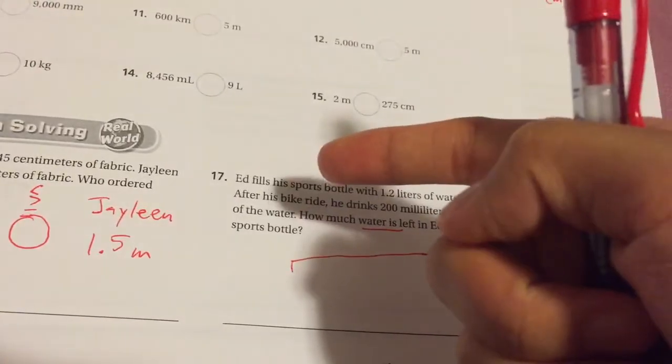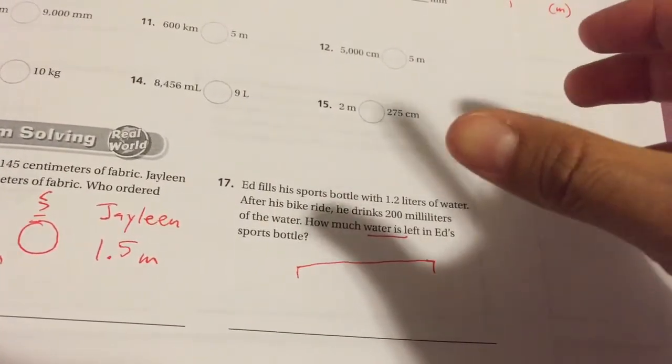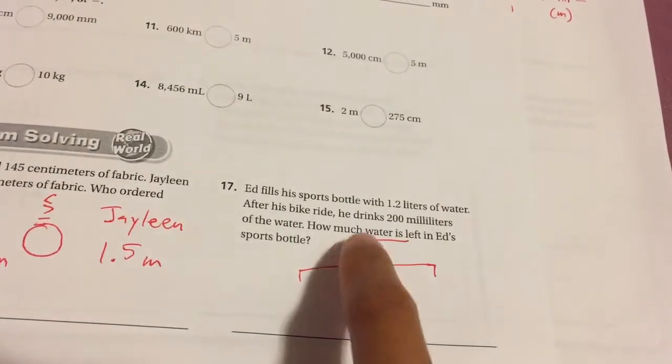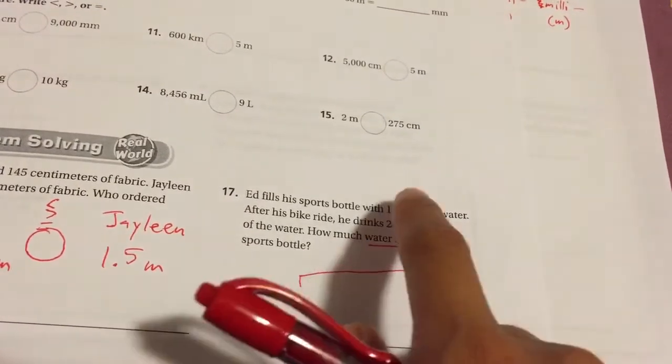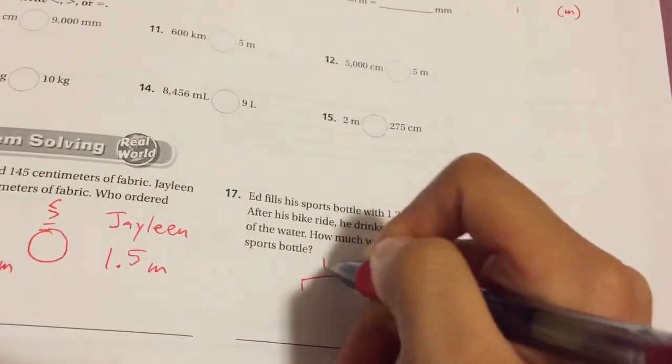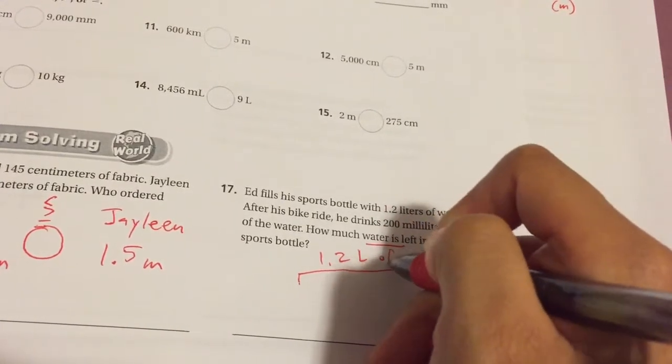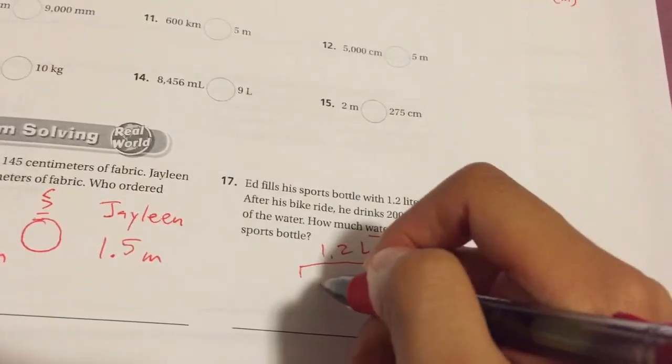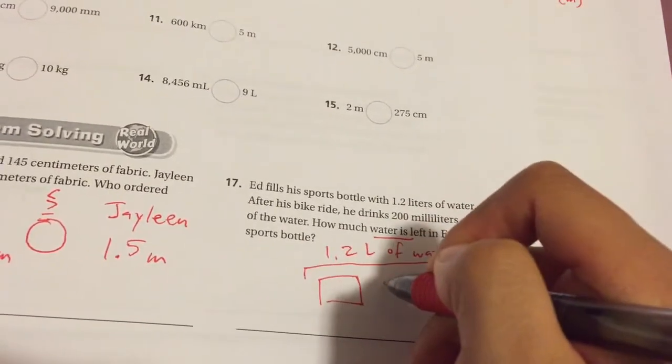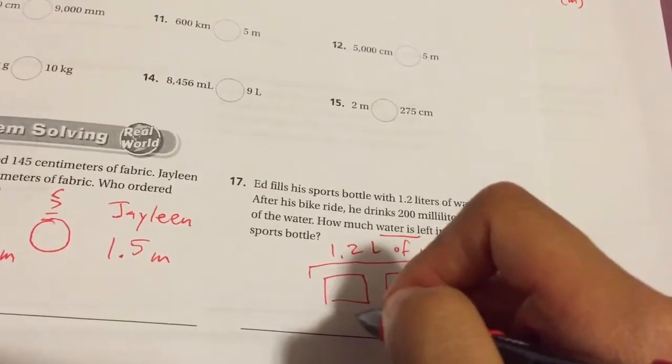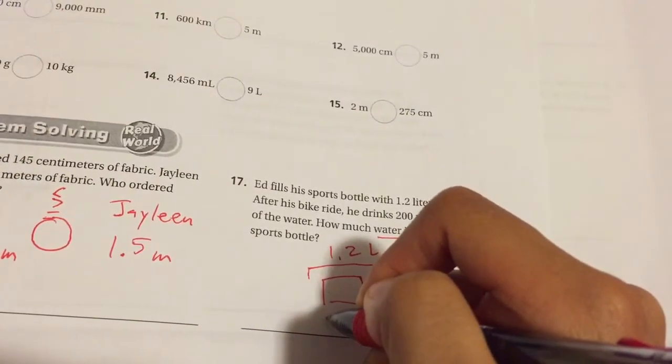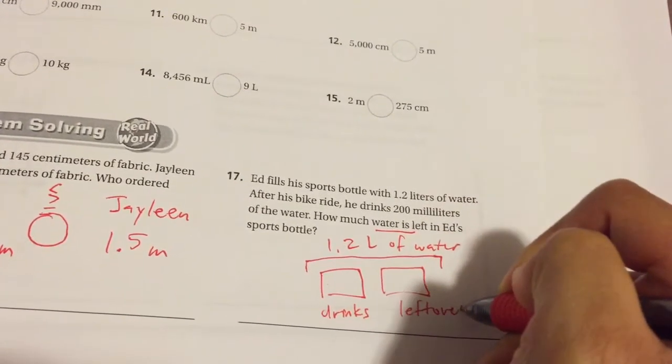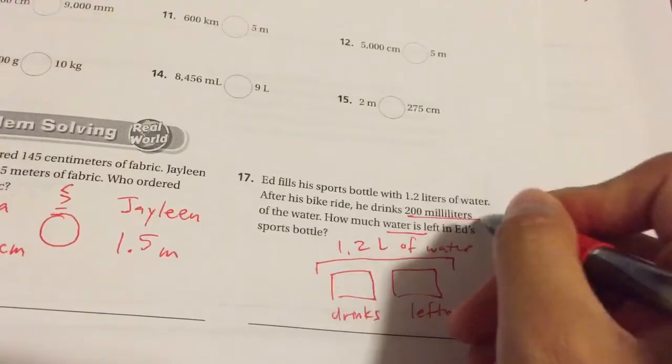What happened was, this gentleman filled up his water bottle. He drank some, and then he had some left. Do you know the total of how much water he started with? Yes, you have 1.2 liters of water in the beginning. During the bike ride, he drinks some, so that's going to be one box. And then he has leftover. This is what he drinks. How much did he drink? He drank 200 milliliters.